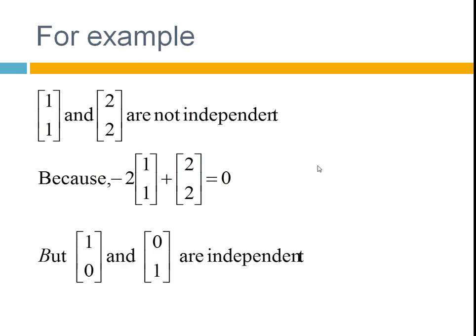These two vectors, on the other hand, are independent, because you can multiply these vectors by whatever you like, apart from the 0 vector, and you will never get 0. Any combination of these two will not give you 0. So these are independent.